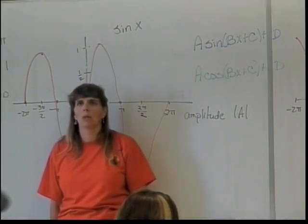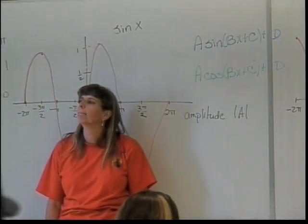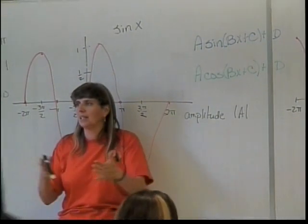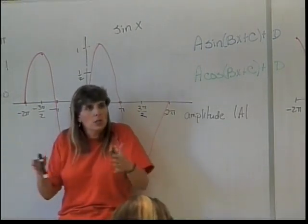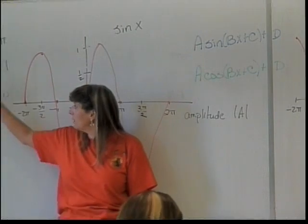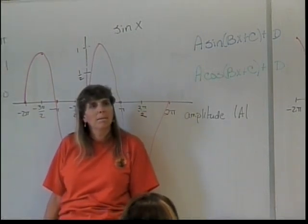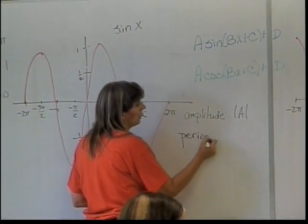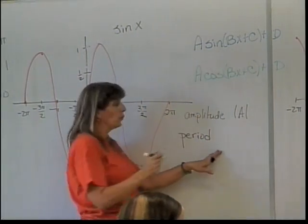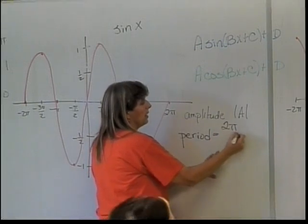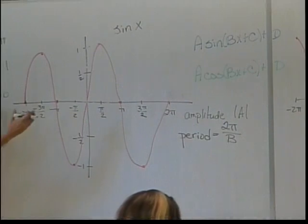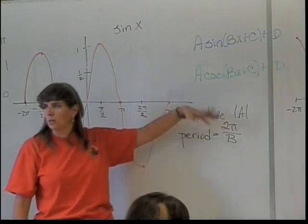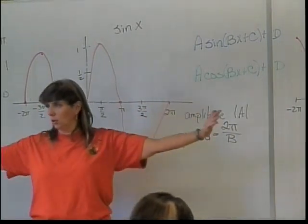What will B do to my graph? It will stretch or shrink it horizontally. This is where we actually see a horizontal change. What will be affected by that? The period. The period of the graph will be affected by B. In general, the period is 2 pi divided by B — the original period of 2 pi divided by the number B. So if B is 1, we're all set. If B isn't 1, we'll get either smaller or wider periods.